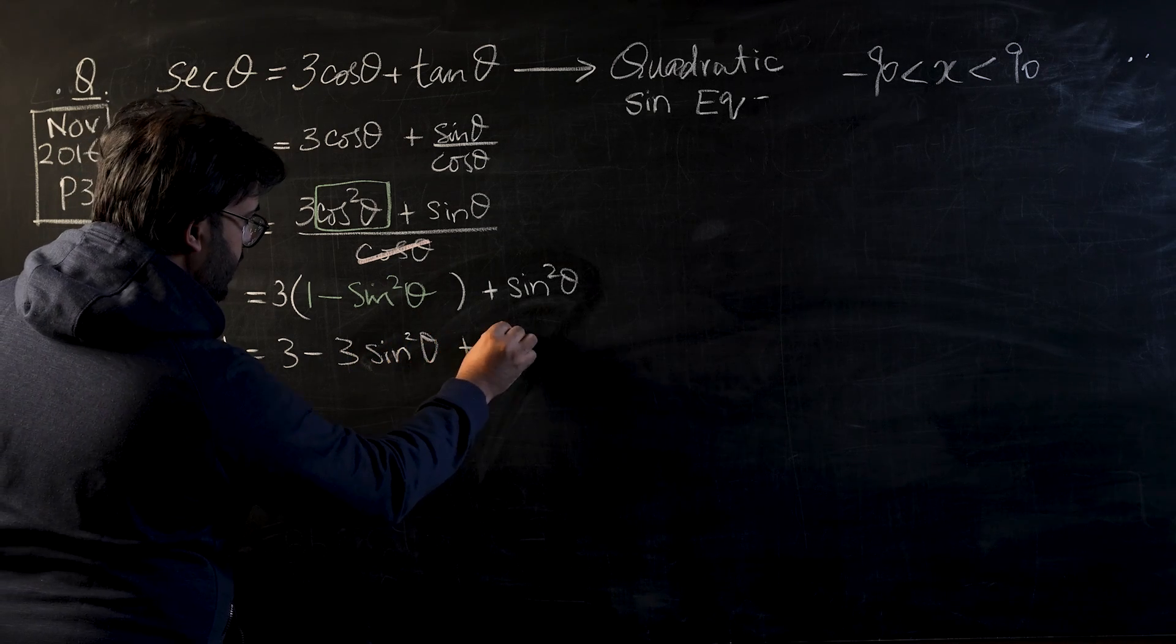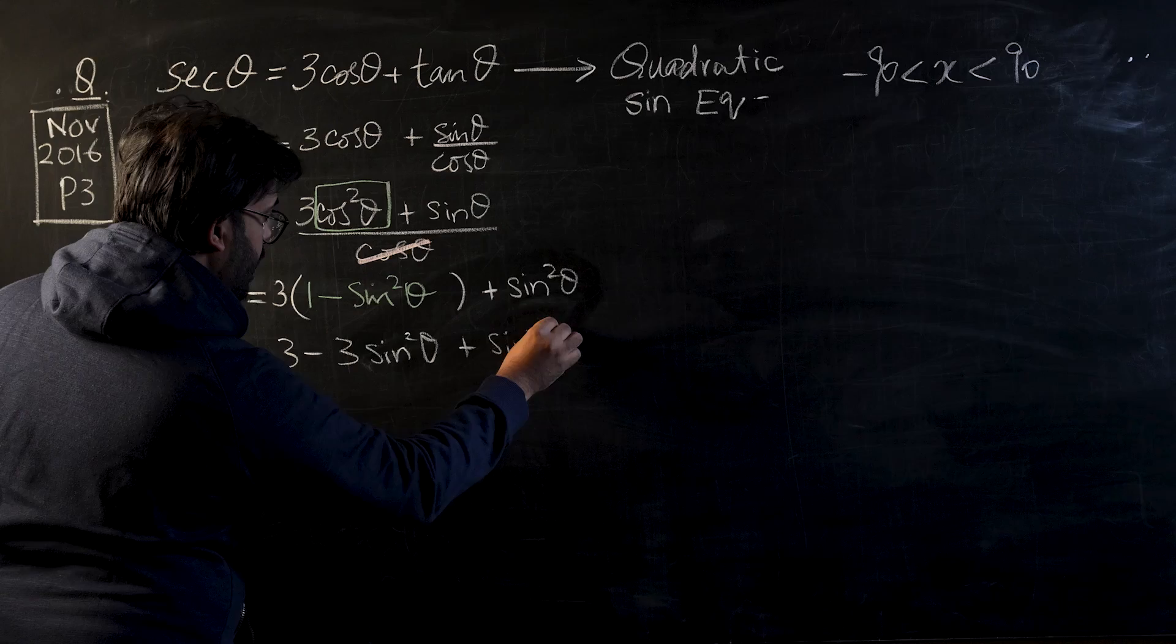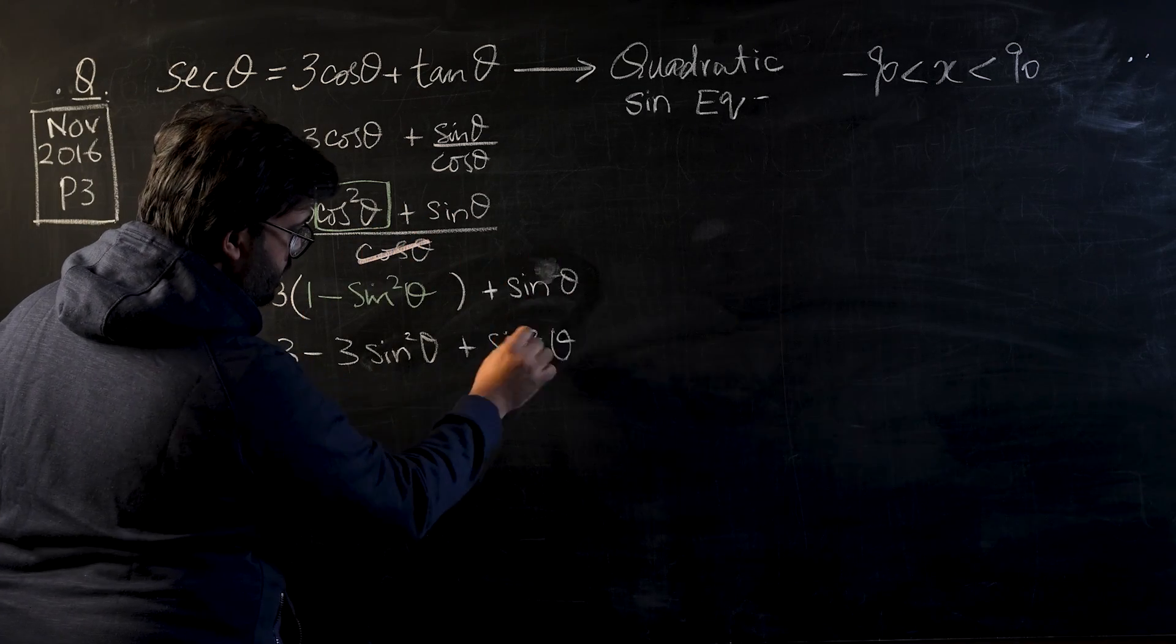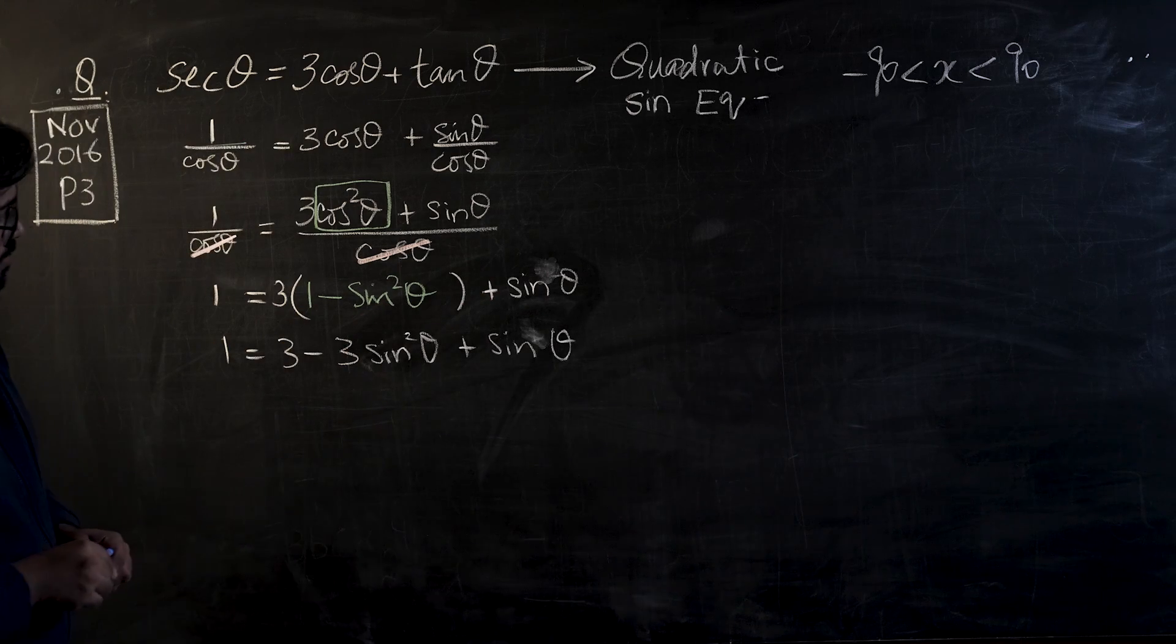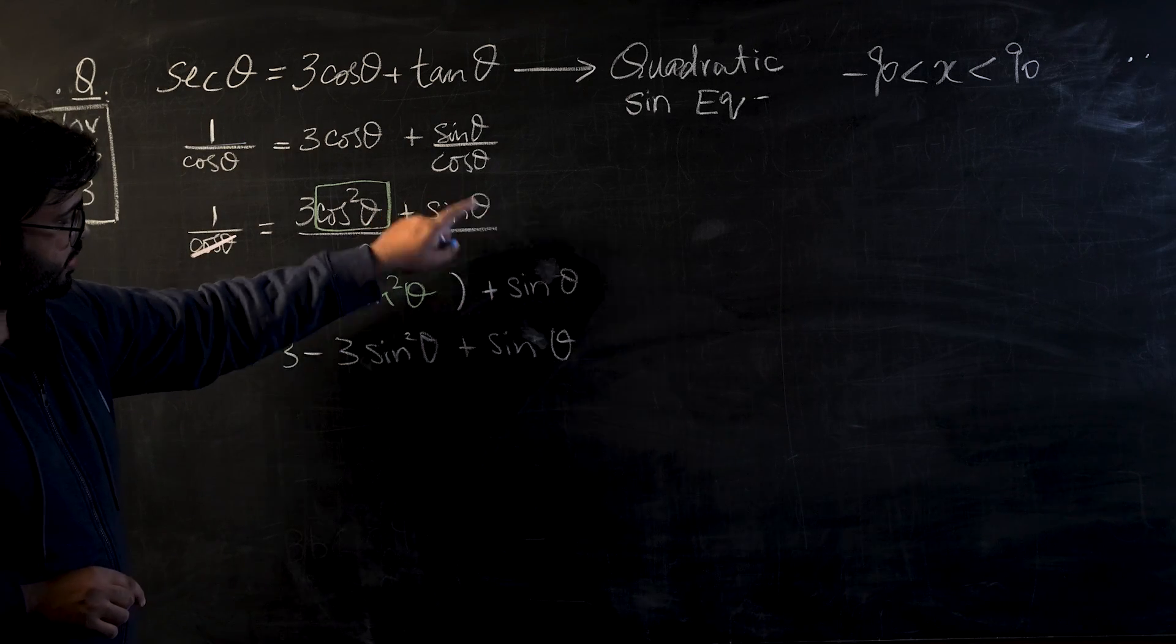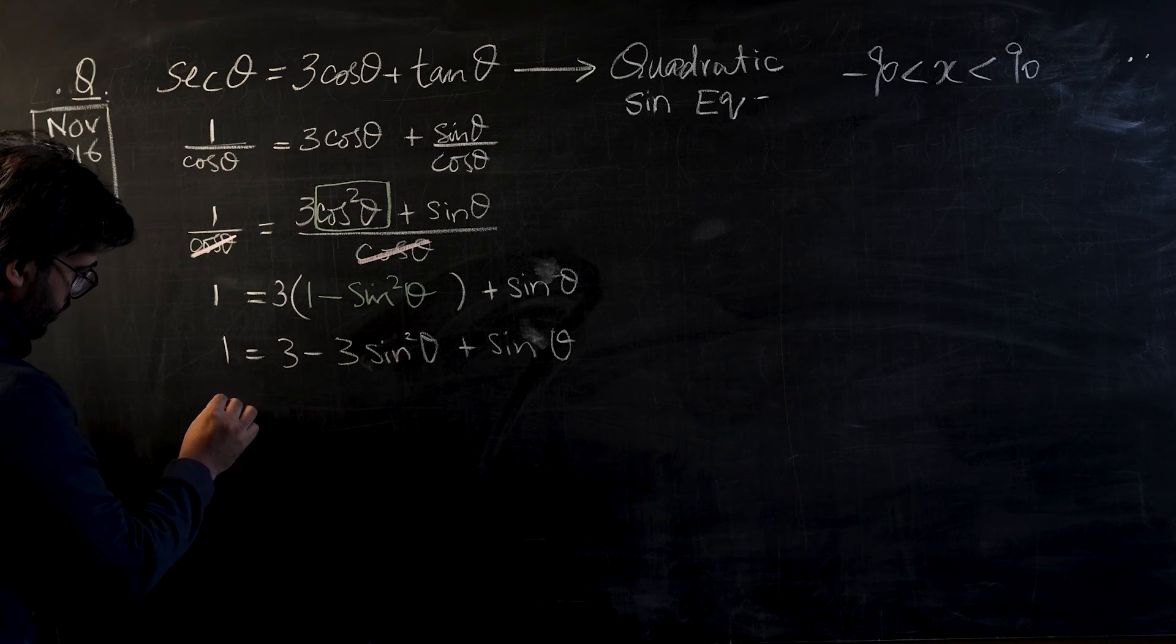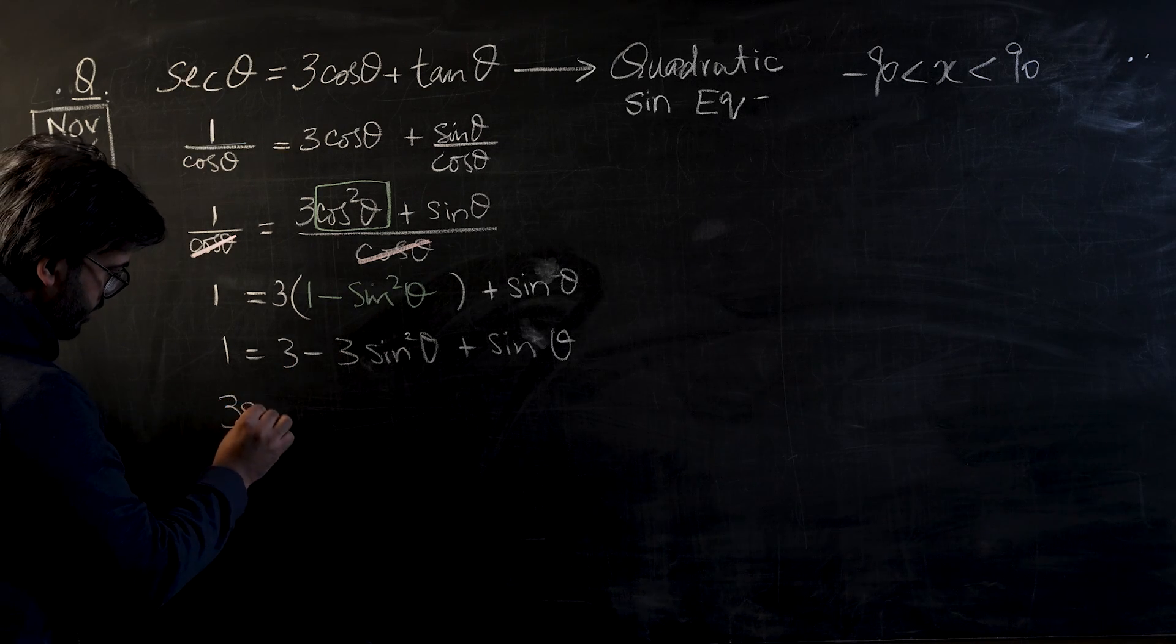1 equals 3 minus 3 sin² θ plus... I think I've made a mistake over here. I think this is not a sine squared term, rather it is a sine term. So this is a sine term, that is correct.